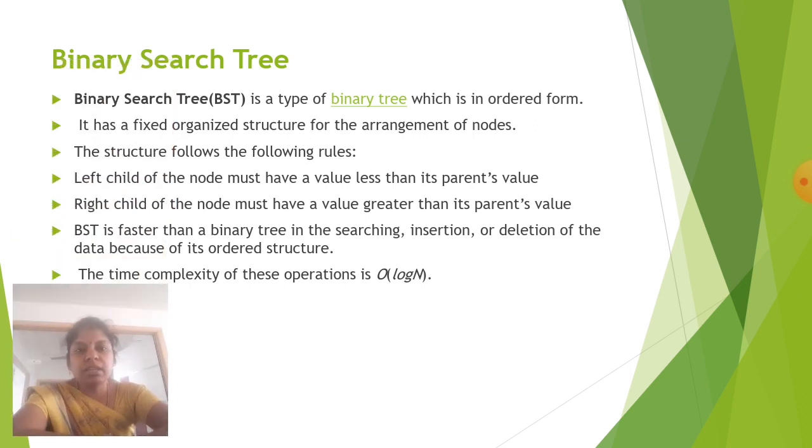The next is binary search tree. Binary search tree which is called as BST is a type of binary tree which is in ordered form. It has a fixed, organized structure for the arrangement of nodes. The structure follows the following rules: left child of the node must have value less than its parent's value. The right child of the node must have greater than the parent value. BST is faster than binary tree in searching, insertion or deletion of the data because of its ordered structure. The time complexity of these operations is order of log n.